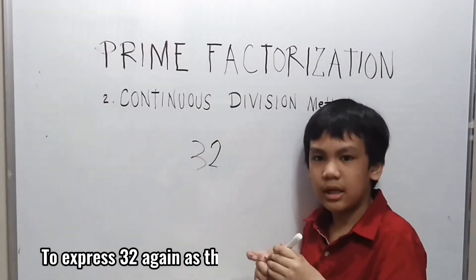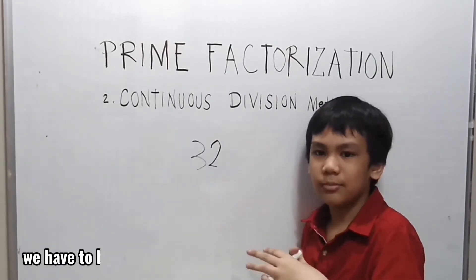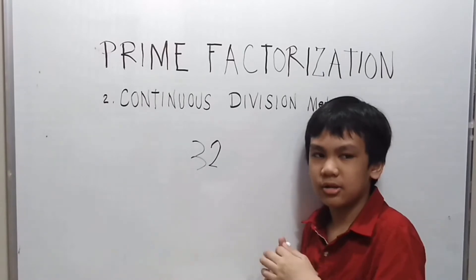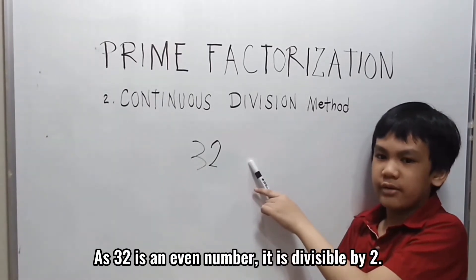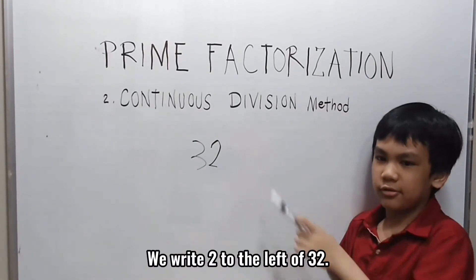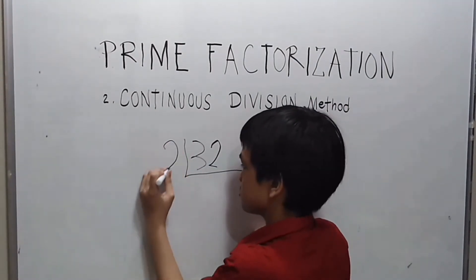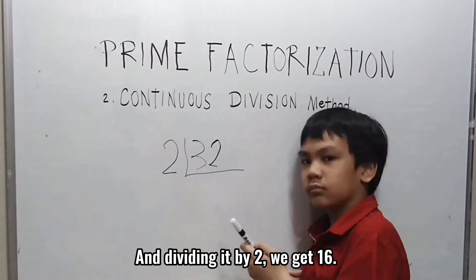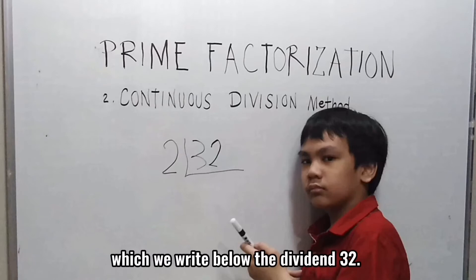To express 32 again as the product of its prime factors, we have to begin with the smallest prime number that divides 32. As 32 is an even number, it is divisible by 2. We write 2 to the left of 32, and dividing it by 2 we get 16, which we write below the dividend 32.